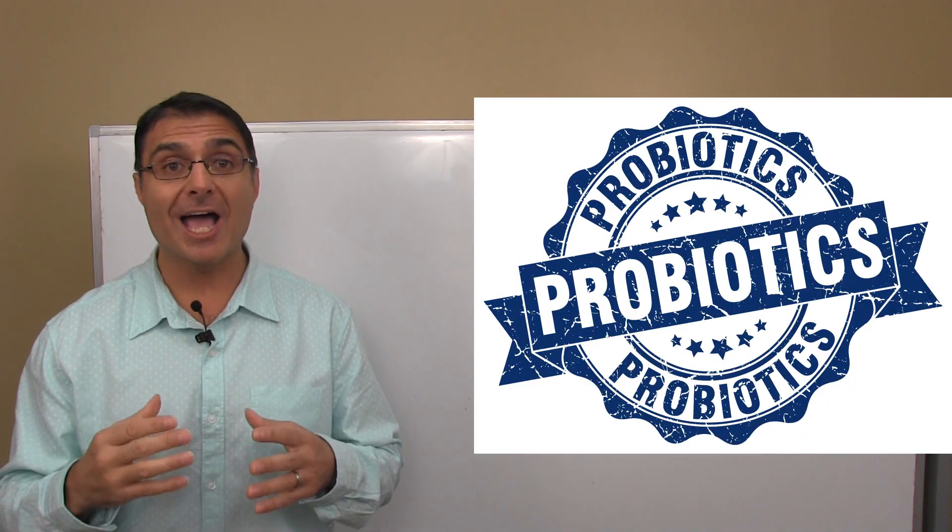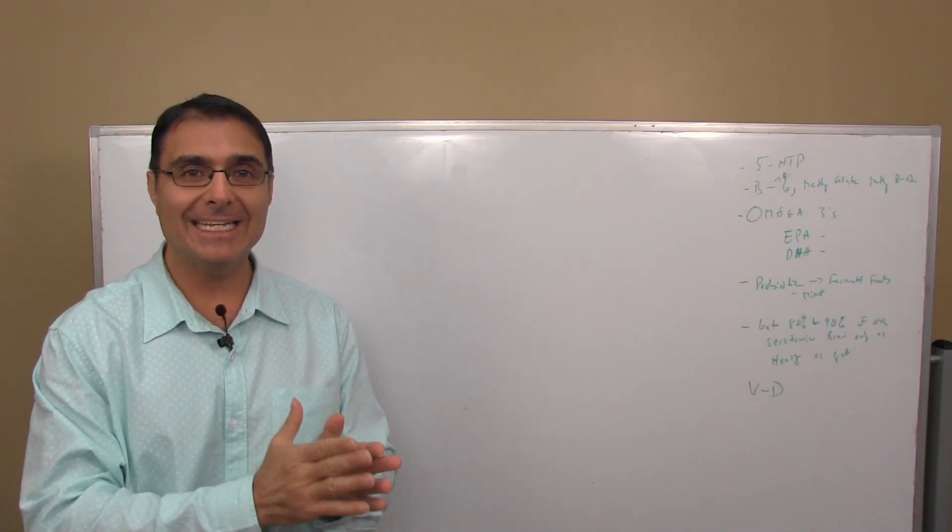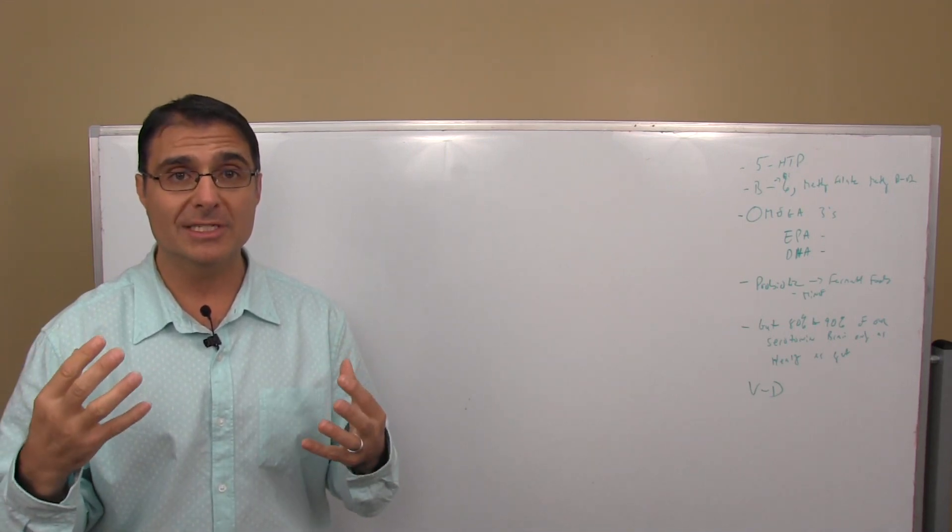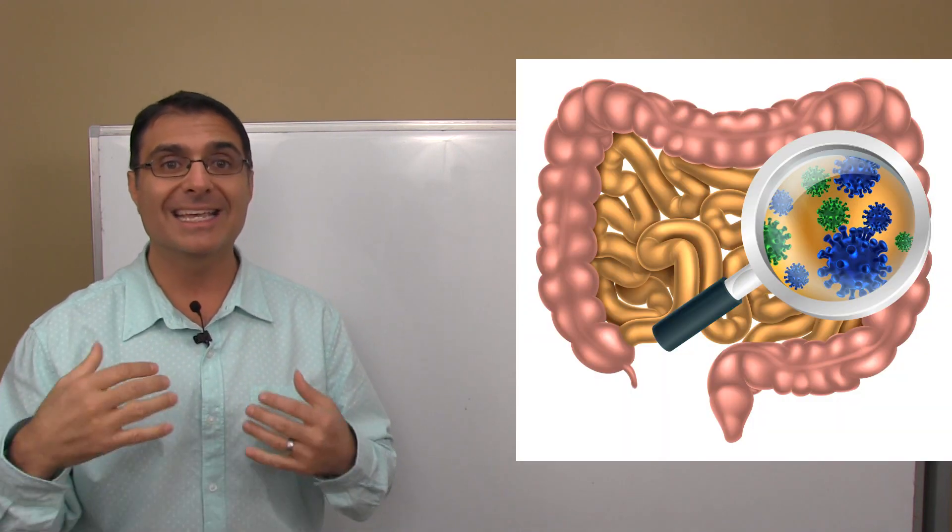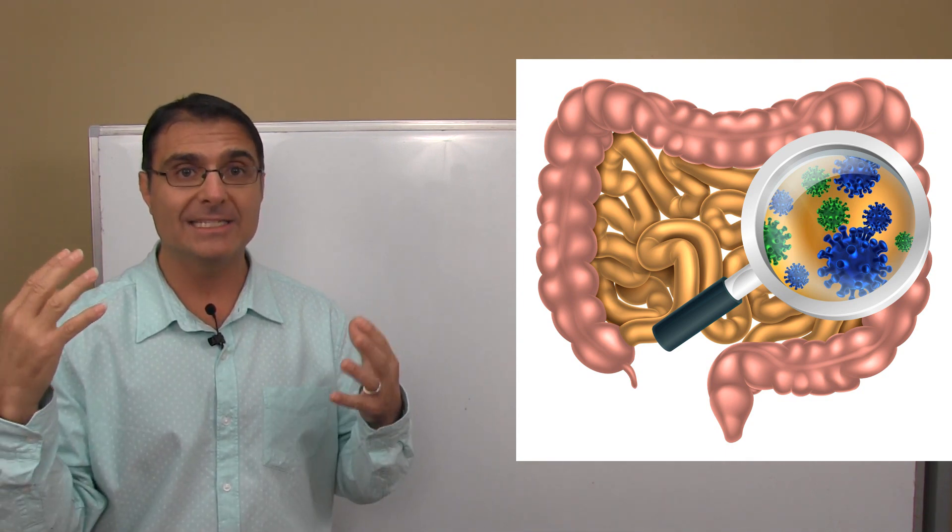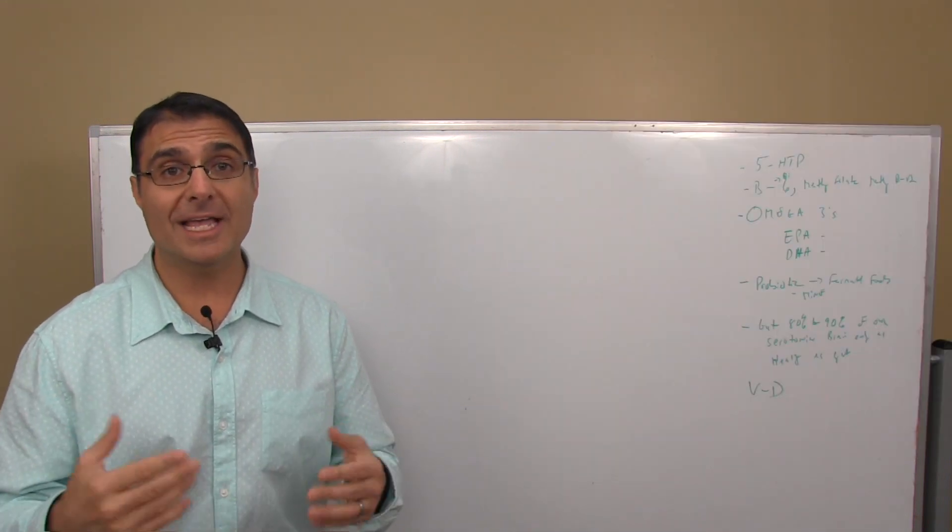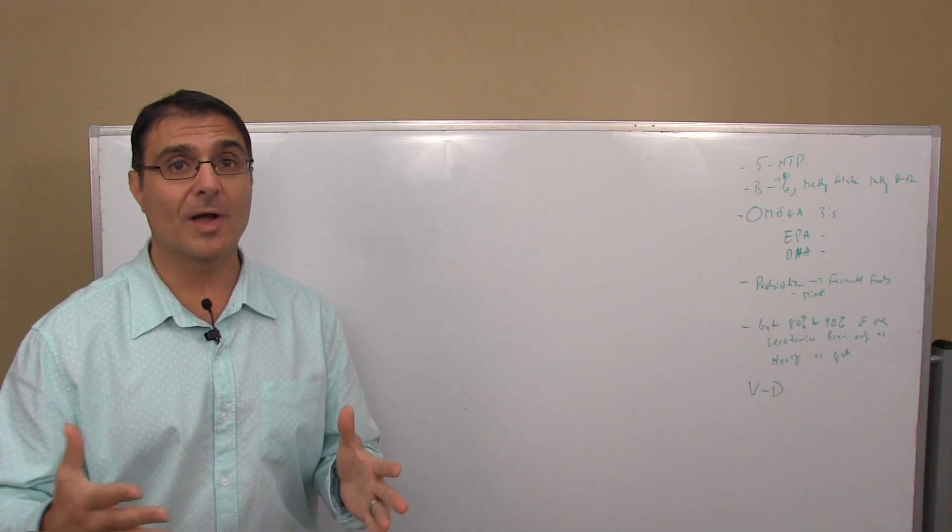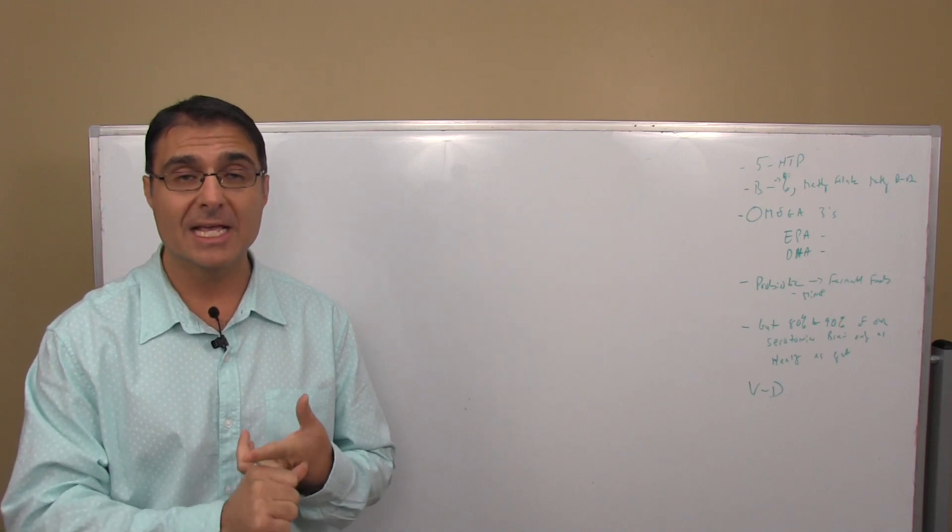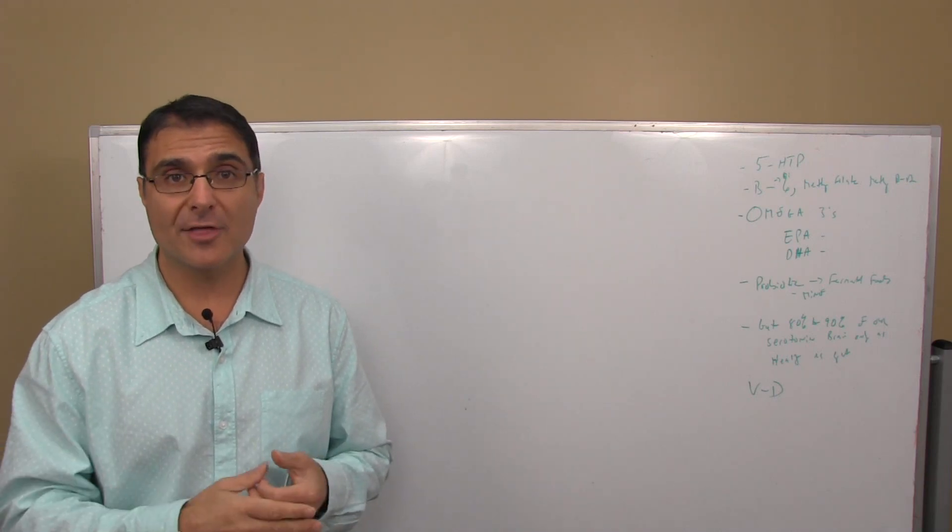And number four on the list is a high-quality probiotic. And why do you need a high-quality probiotic? Well, it's because 80% to 90% of all the serotonin that your body makes, that your brain uses, is actually made in your gut. Yes, in your GI tract. That's where 80% to 90% of the serotonin that your brain needs is produced. So you need a great probiotic to help keep that gut healthy. I, of course, am partial to my probiotic, Dr. Rob's Ultimate Flora Support, but there's a lot of great brands out there. Dr. Ohara's probiotic is great. Natren's has some great probiotics. Probiotic 22 by Orthomolecular is another good one.